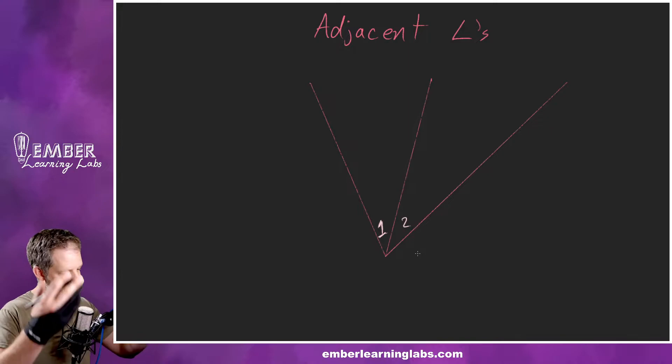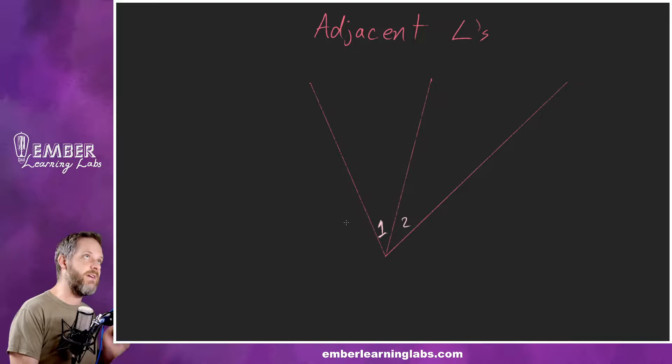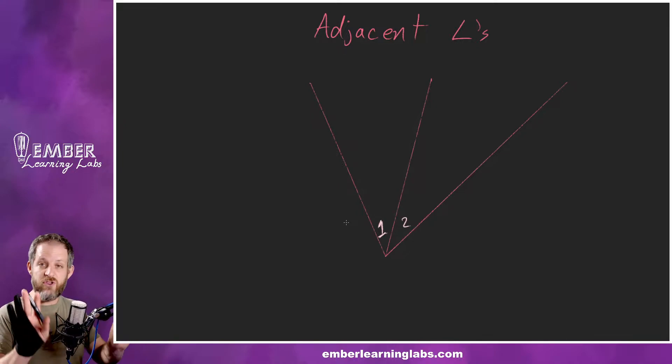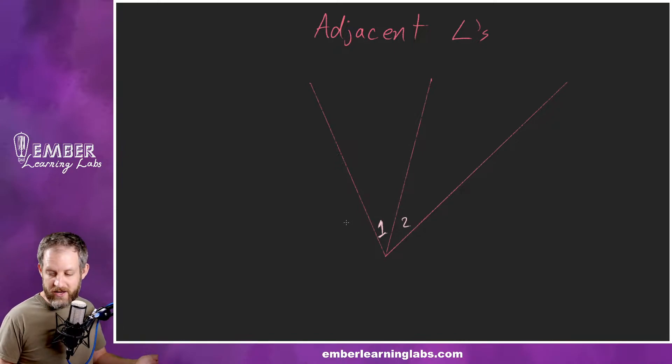We already looked at an example of a couple of adjacent angles, a more specific one in our last lesson talking about angle bisectors. Angle bisectors have two adjacent angles that are congruent.